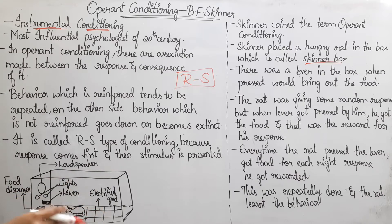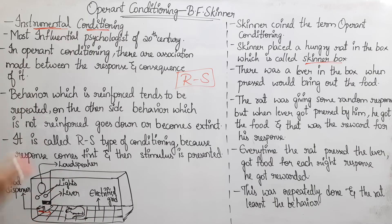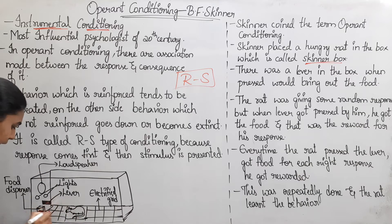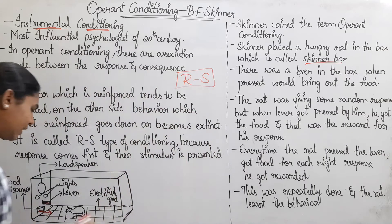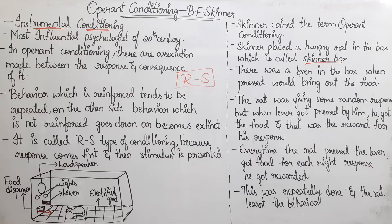At first the rat presses the lever once, twice, thrice — and after doing it 10 or 20 times, it gets food. Every single time it presses the lever, food is presented. So the rat is given this reward for its response. By reinforcement, when the activity is repeated, the behavior changes.